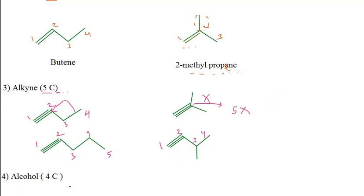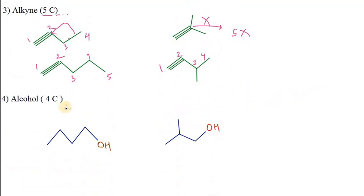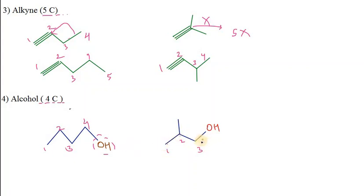For an alcohol to show chain isomerism, in case of alcohol we need 4 carbons. So 1, 2, 3, 4 carbons in the principal chain in case of alcohol. If we take 1, 2, 3 — a 3-carbon chain with 3 carbon atoms — that's why this is also an alcohol. So it needs 4 carbons. That's how we form chain isomers in case of alcohol.